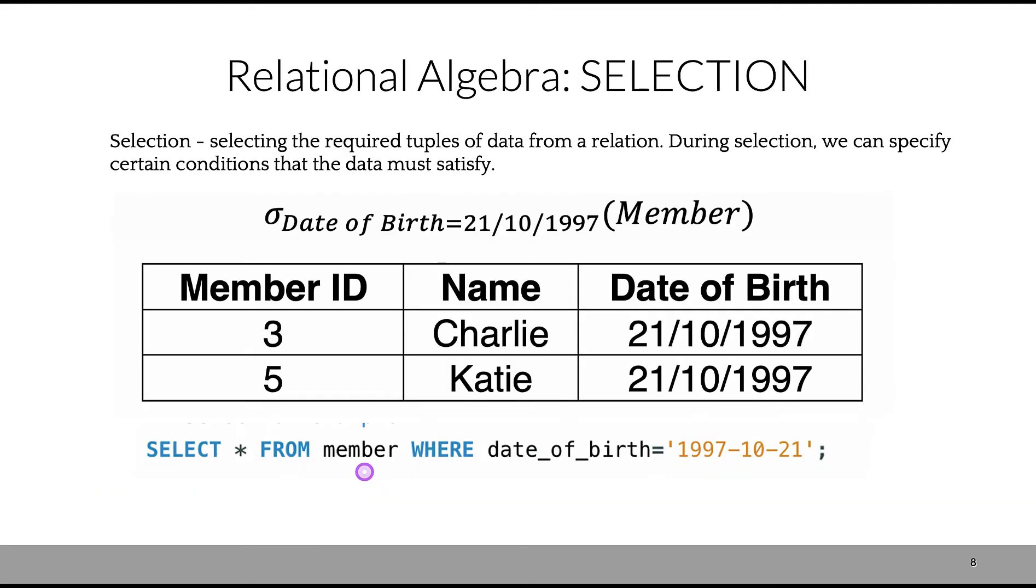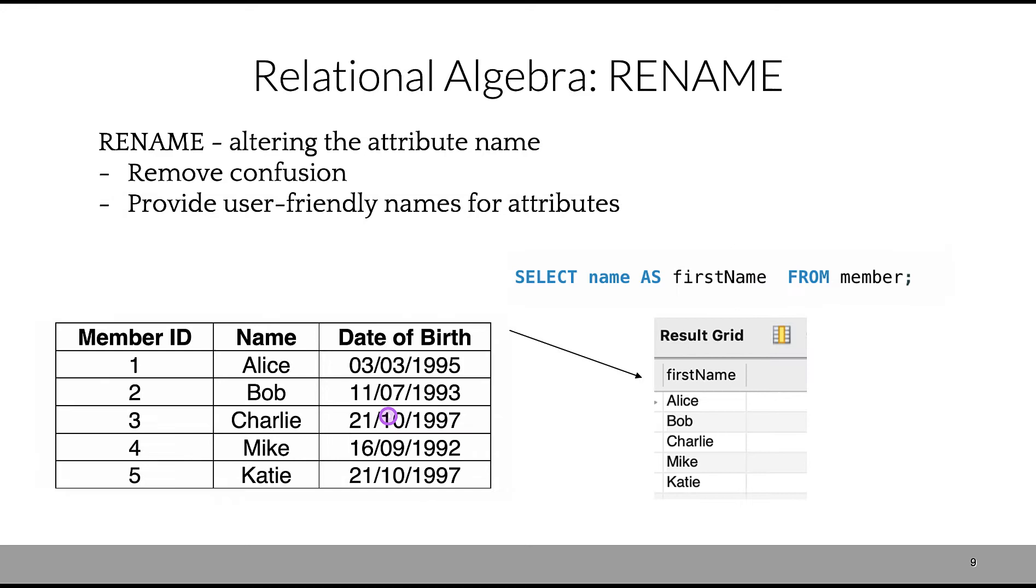Our second relational algebra component is selection. We're selecting required tuples of data from our relation, and we can also specify some conditions. In this case, the condition would be a certain date of birth for table 'member.' Note this asterisk means select all columns, select all attributes, and we place the WHERE condition after the table selection.